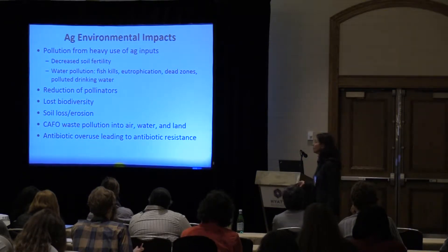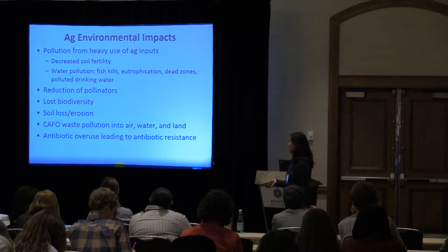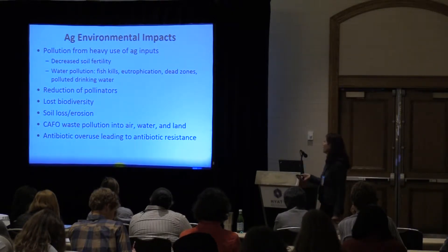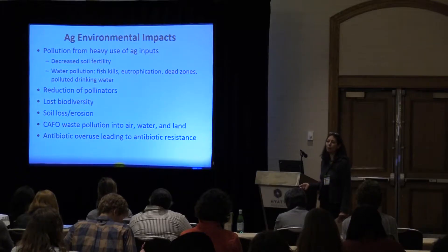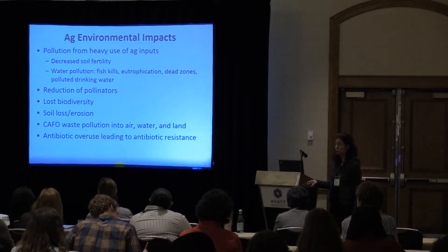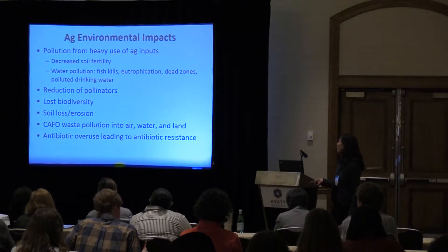We see a big reduction of pollinators caused by utilizing pesticides and high levels of chemicals, lost biodiversity, and soil loss from major soil erosion. CAFOs — confined animal factory operations — the waste from those animals causes major pollution into air, water, and land, really impacting the communities around them, as well as waterways downstream, very far downstream at times. Antibiotic overuse leads to antibiotic resistance.